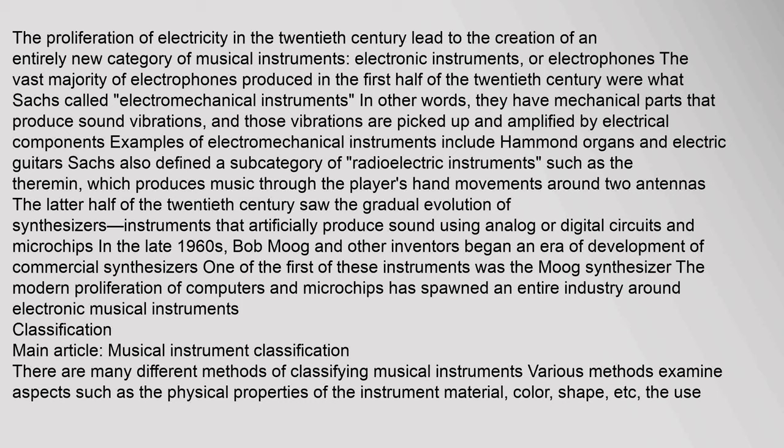The vast majority of electrophones produced in the first half of the 20th century were what Sachs called electromechanical instruments — they have mechanical parts that produce sound vibrations, and those vibrations are picked up and amplified by electrical components. Examples of electromechanical instruments include Hammond organs and electric guitars. Sachs also defined a subcategory of radioelectric instruments such as the theremin, which produces music through the player's hand movements around two antennas. The latter half of the 20th century saw the gradual evolution of synthesizers — instruments that artificially produce sound using analog or digital circuits and microchips. Bob Moog and other inventors began an era of development of commercial synthesizers in the late 1960s, producing the Moog synthesizer.